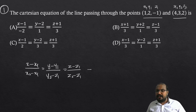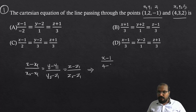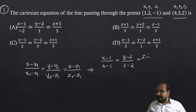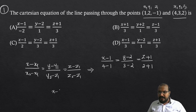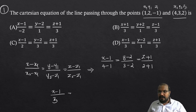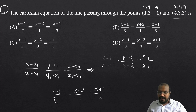Substituting: x minus 1 divided by 4 minus 1, equal to y minus 2 divided by 3 minus 2, equal to z minus (minus 1) divided by 2 minus (minus 1), which is 2 plus 1. So x minus 1 by 3 equal to y minus 2 by 1 equal to z plus 1 by 3.